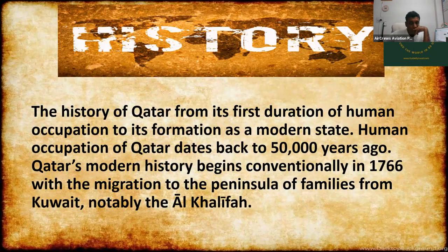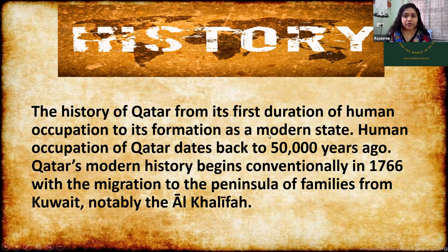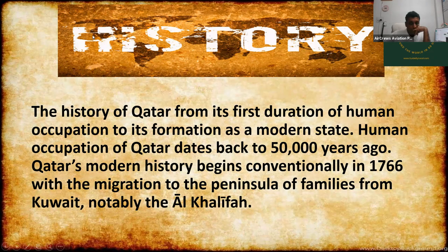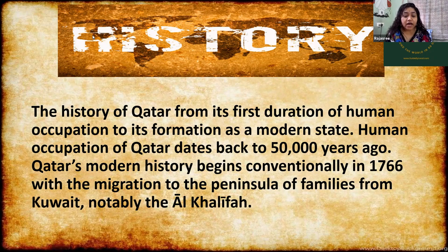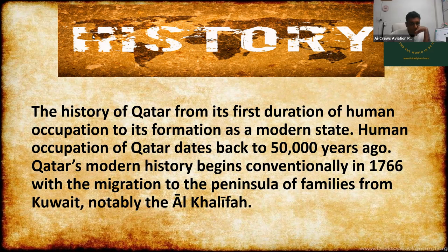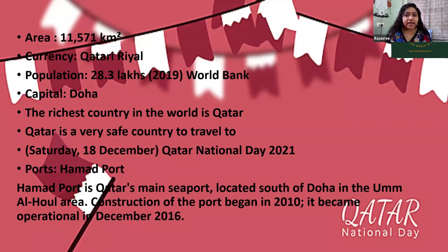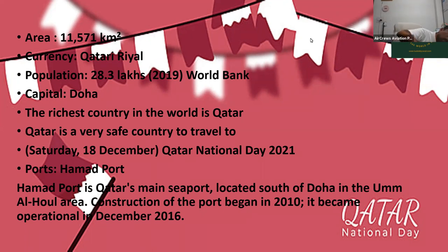The history of Qatar spans from its first period of human occupation to its formation as a modern state. Human occupation of Qatar dates back to around 50,000 years ago. Qatar's modern history begins conventionally in 1766 with the migration of peninsular families from Kuwait, notably the Al-Khalifa. The area of the country is 11,571 square kilometers. The national currency is the Qatari Riyal, and the population is around 28.3 lakhs. The capital, as we know, is Doha.